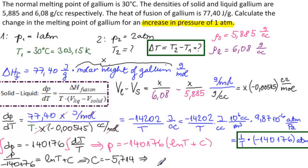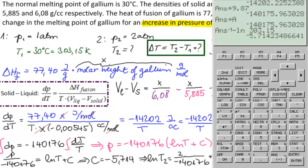That means that ln of T2 equals 2 over minus 14176 plus 5.714. So T2 equals e to whatever this is. So let's find that.